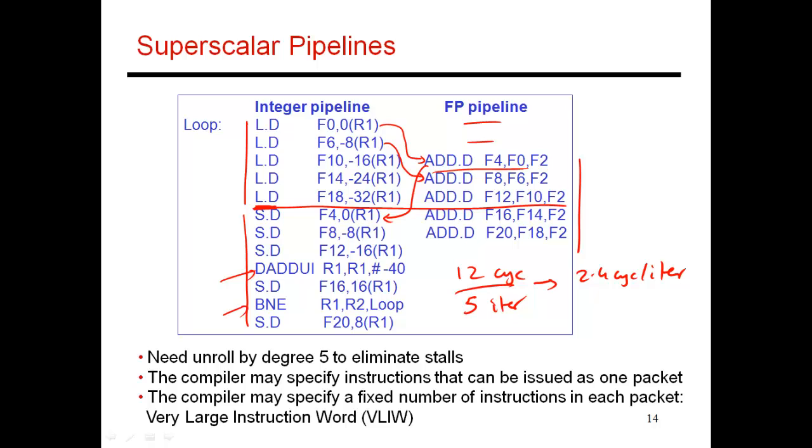In some cycles, I can exceed my earlier IPC or my earlier ideal IPC of one. I can do an IPC of two in some cycles. And this is what allows me to exceed my earlier target of three and bring down my execution time to as little as 2.4 cycles per iteration. So if you increase the width of your pipeline, you'll get even higher performance.